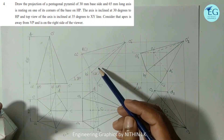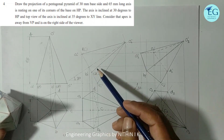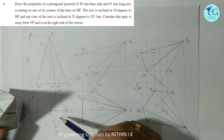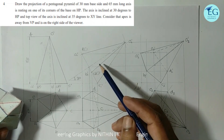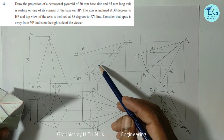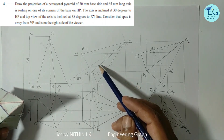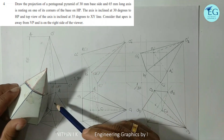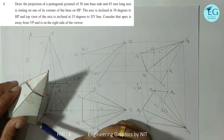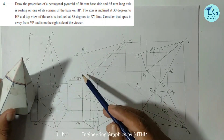The next change involves inclination with HP. Because HP is the constraint here, the axis is inclined at 30 degrees to HP. The axis inclination is 30 degrees.